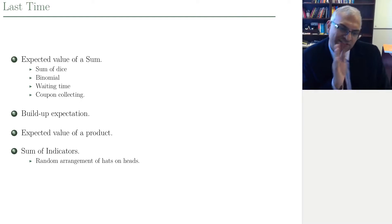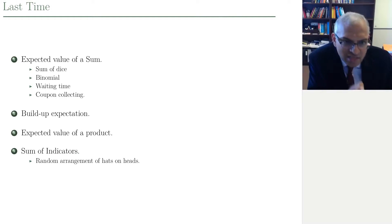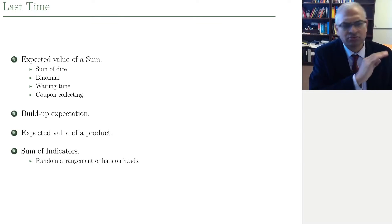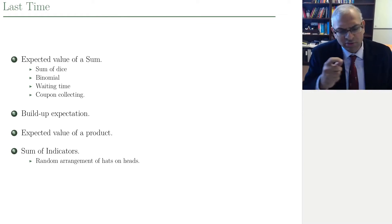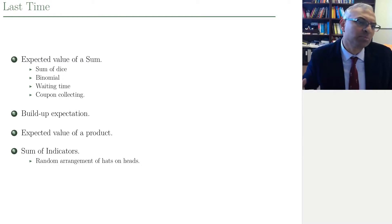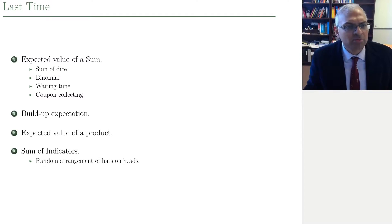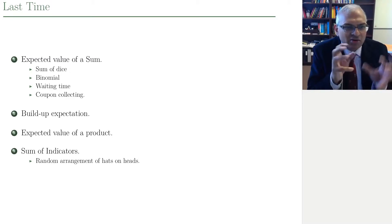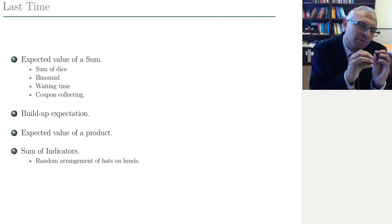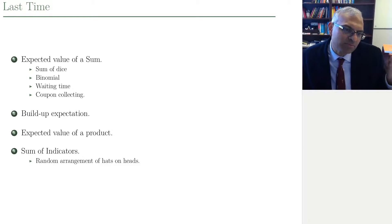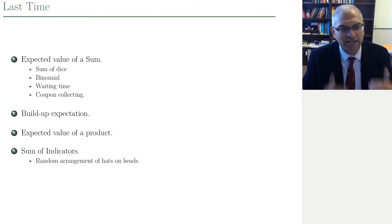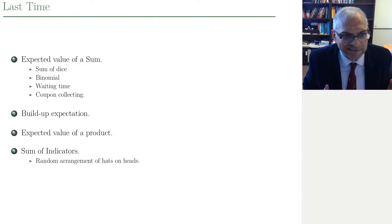The expected value of a sum is the sum of expected values, and we applied this to the sum of dice, the binomial — which we represent as a sum of binary or Bernoulli random variables — the waiting time, which we had to creatively represent as a sum of waiting times to each success, and we applied that to coupon collecting.